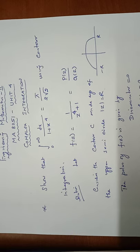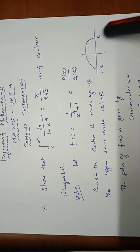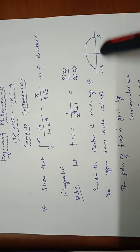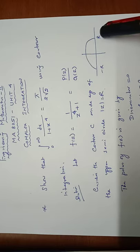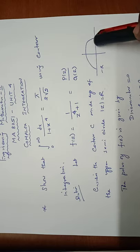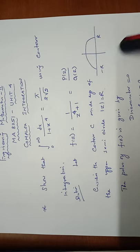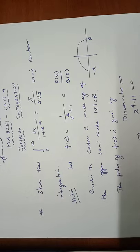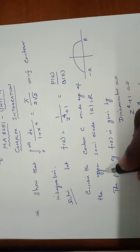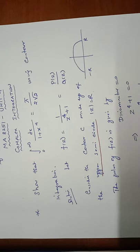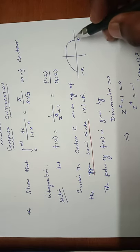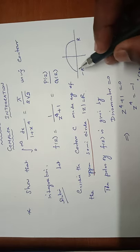We take the upper semicircular arc from −R to +R. This is the closed contour C. We take only the upper semicircle, with |z| = R. All the points lie within the upper semicircle.